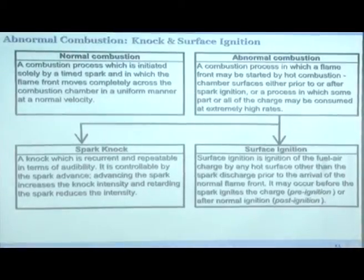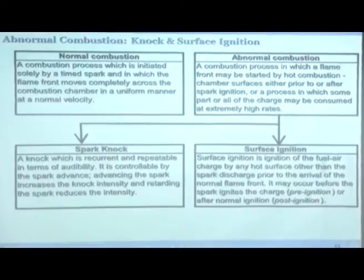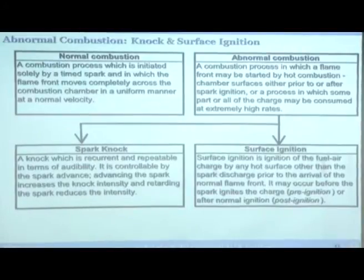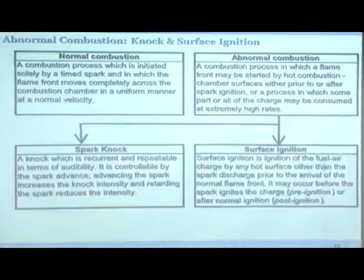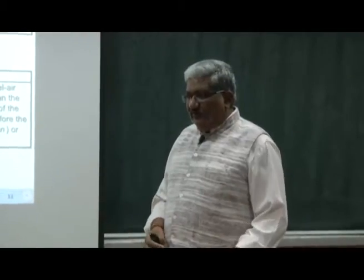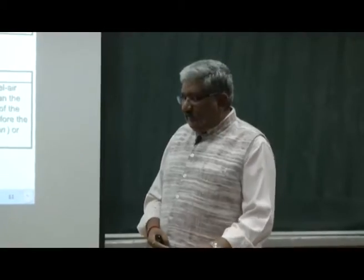There are two main types of abnormal combustion. One is spark knock, and the other is surface ignition. Spark knock is recurrent and repeatable in terms of audibility — you can hear it. If you have driven a motorbike, when running at 20 km/h in third or fourth gear, you hear a sharp metallic hammering noise — that is spark knock. You then change to a lower gear.